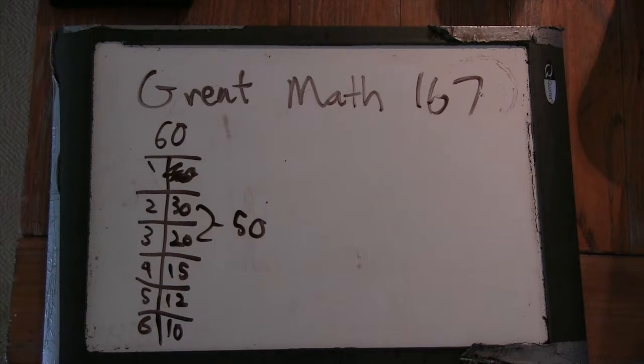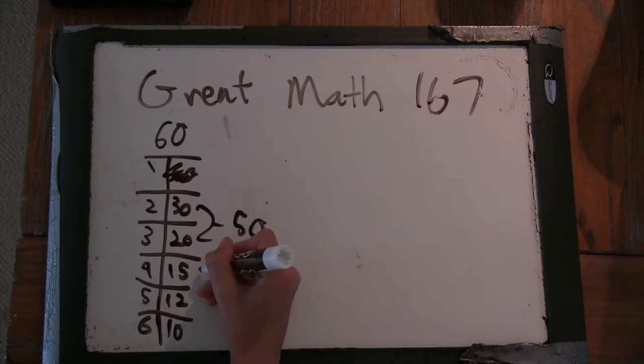So 60 is looking like an abundant number. Alright, so why don't we see what they add up to.